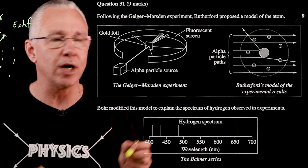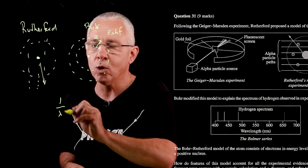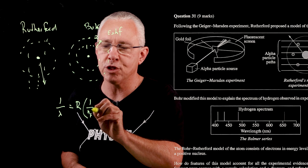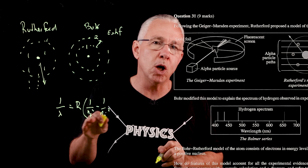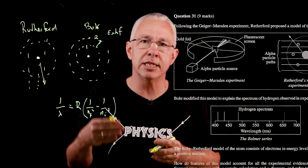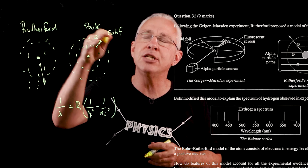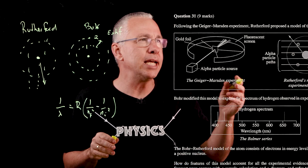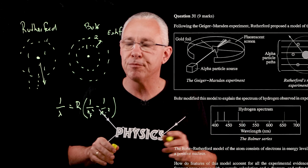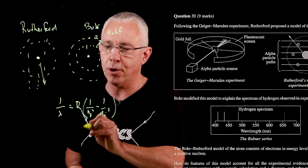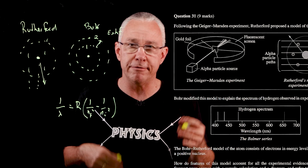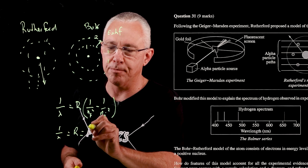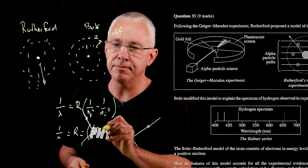The hydrogen spectral graph was described mathematically by Balmer and Rydberg. The Rydberg equation states that the wave number — the inverse of wavelength — equals the Rydberg constant multiplied by (1/n_f² − 1/n_i²), where n_f and n_i are discrete whole-number energy levels. Bohr showed that if n_f and n_i represent energy levels, we can work out the exact energy from this mathematical relationship. For the Balmer series shown here, n_f equals 2.